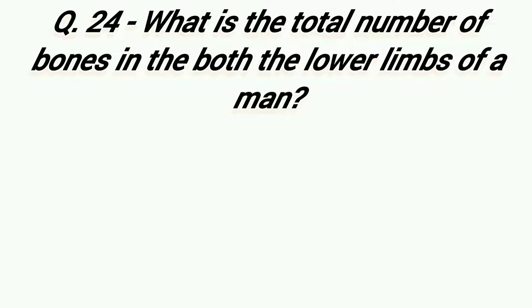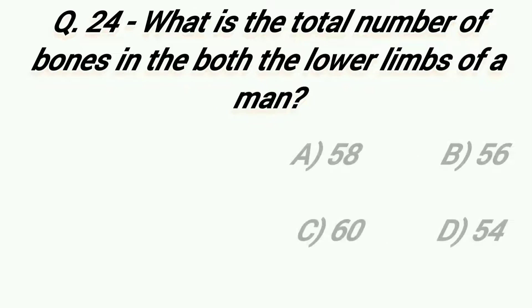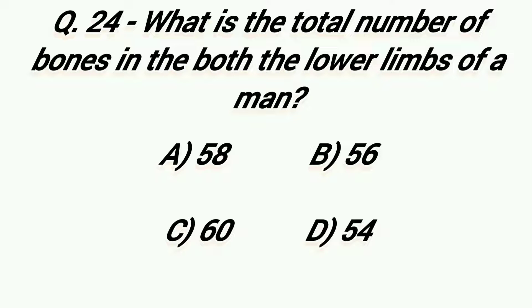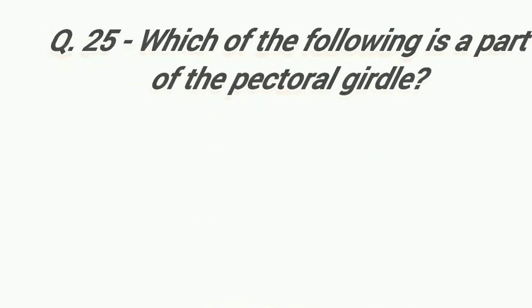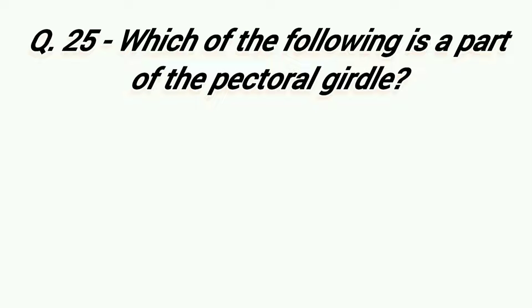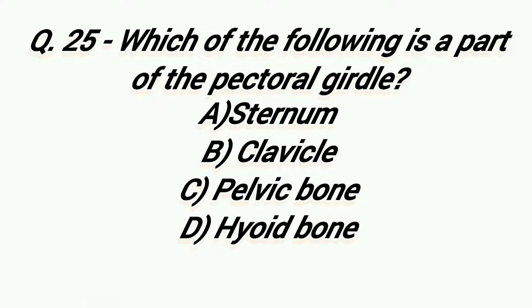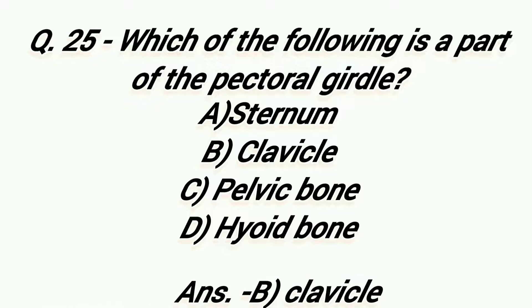What is the total number of bones in both lower limbs of a man? Option A: 58, Option B: 56, Option C: 60, Option D: 54. Right answer is Option C, 60. Which of the following is a part of the Pectoral Girdle? Option A: Sternum, Option B: Clavicle, Option C: Pelvic Bone, Option D: Hyaline Cartilage. Right answer is Option B, Clavicle.